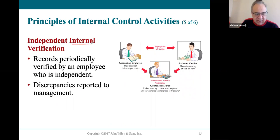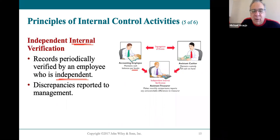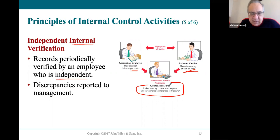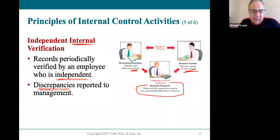Independent internal verification means a third party who is independent of the process but knowledgeable reviews the records. Going back to Employee A keeping the books and Employee B holding the physical cash — an independent person like an assistant treasurer verifies that those records match. If there's anything wrong — a discrepancy — it's reported to management and investigated, because possible fraud could be occurring.